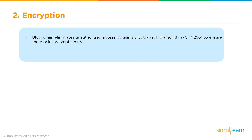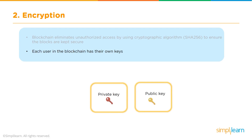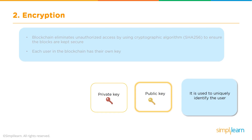Encryption: Blockchain eliminates unauthorized access by using the cryptographic algorithm SHA-256 to ensure that blocks are kept secure. Each user in the blockchain has their own keys. Any user who onboards a blockchain network is provided with two sets of keys — one private, one public. The private key is known only to the sender and is used to confirm if the origin of a transaction is legitimate. The public key is used to uniquely identify the user but is shared by the sender with every transaction on the blockchain network.